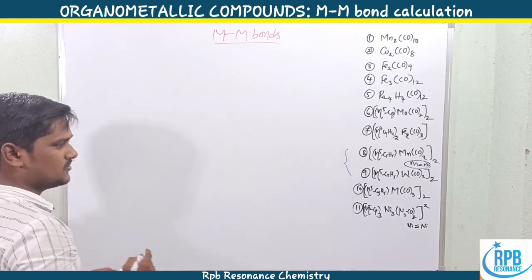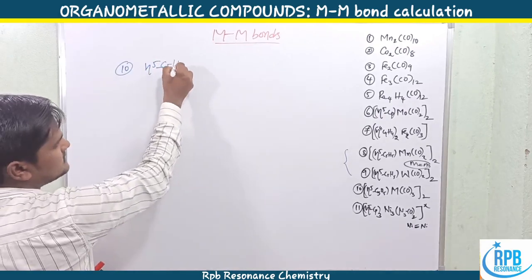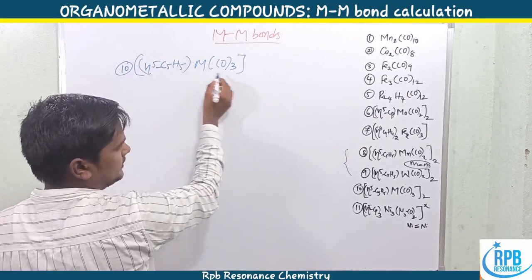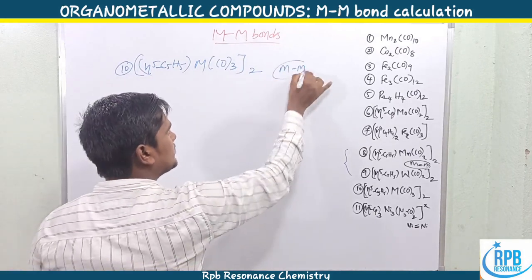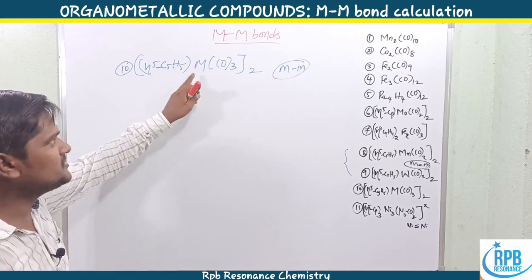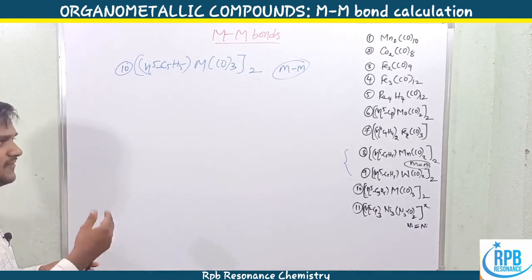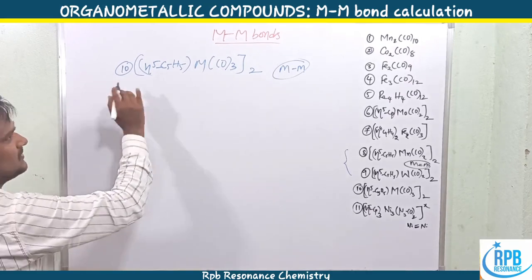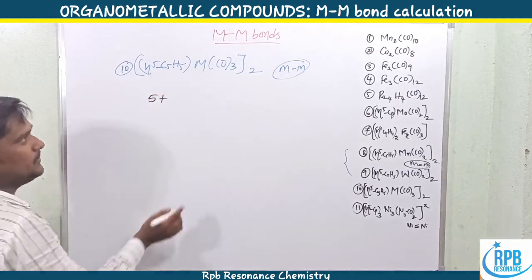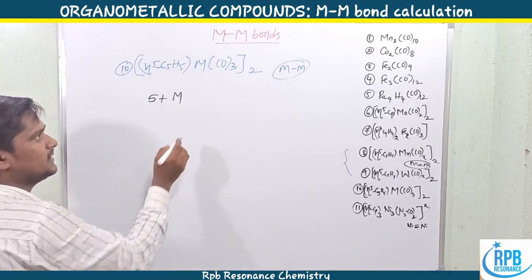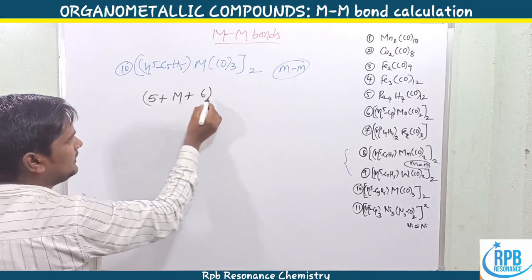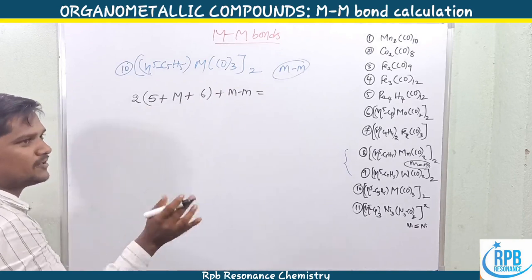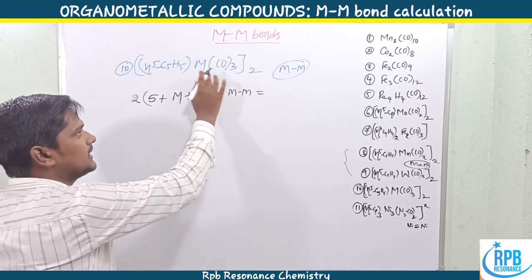Problem 10: [η⁵-C₅H₅M(CO)₃]₂, where M is an unknown metal. The side information given is one metal-metal bond. We set up the equation: 2×5 + 2M + 2×(3×2) + 2 = 36. So 10 + 2M + 12 + 2 = 36, giving 24 + 2M = 36, so 2M = 12 and M = 6 outermost electrons per metal.